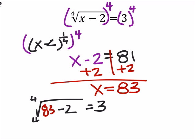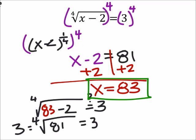So that'd be the fourth root of 81. Does that equal 3? Yes it does. The fourth root of 81 does equal 3. So we can say with confidence that our answer is 83.